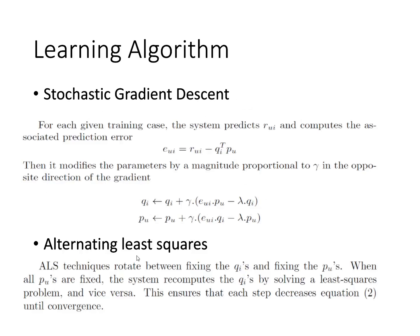The second technique is alternating least squares (ALS). In ALS, the algorithm fixes q and updates p_u, then alternately fixes p_u and updates q_i, repeating until convergence. Both methods are used to learn this model.